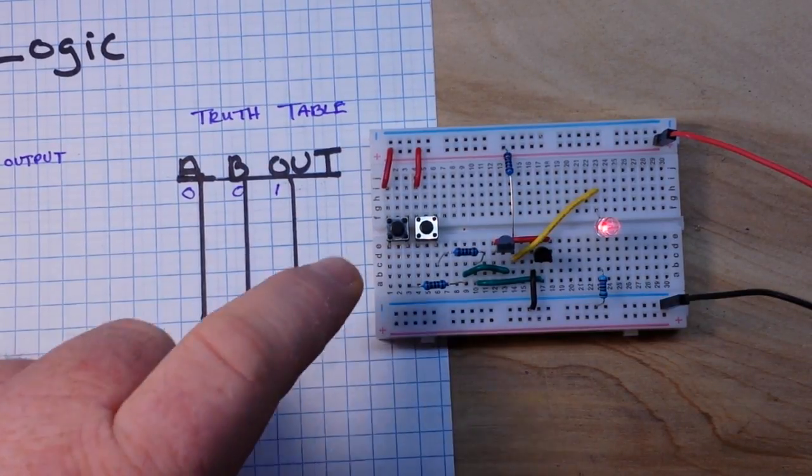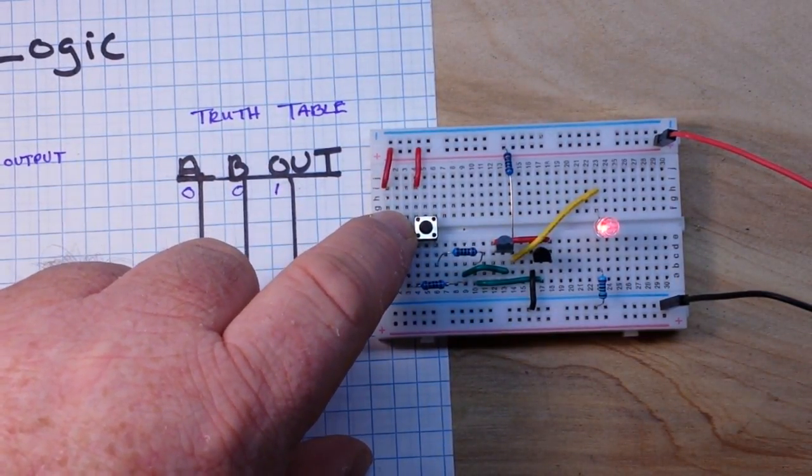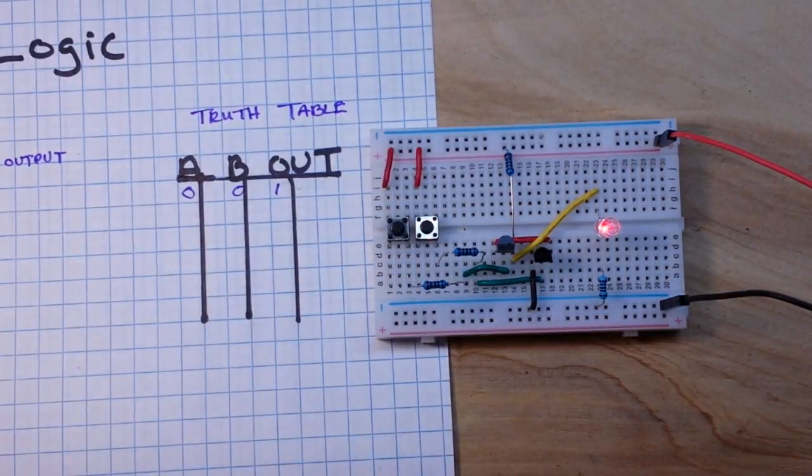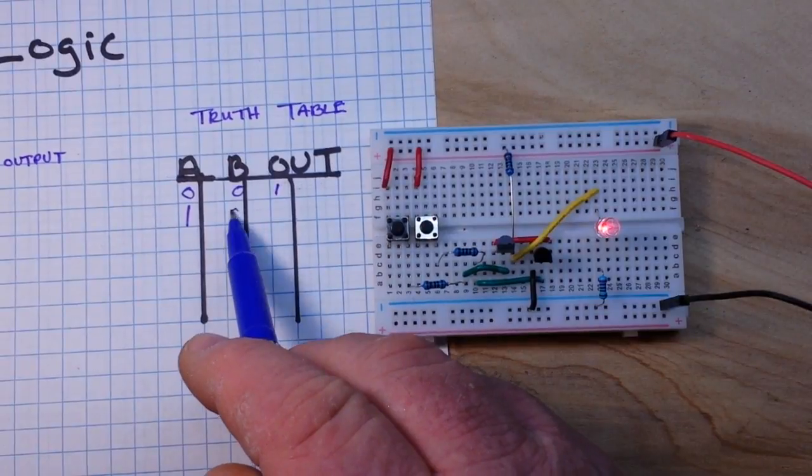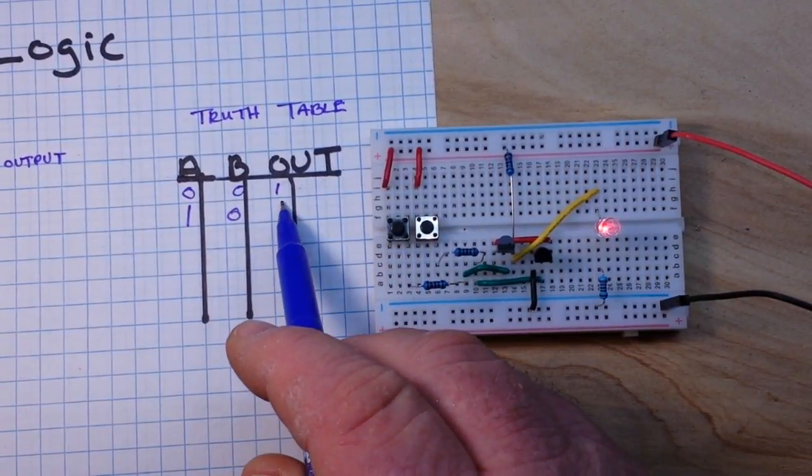So if we press A we make A true. No change. So with A true, B false, the output is still 1.